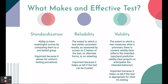Standardization is the ability to have meaningful scores by comparing them to a pre-tested group, allowing for uniform testing procedures. That's why we have standardized tests like the Regents, the SAT, the ACT, and for grad school the GRE, MCAT, GMAT, and LSAT. They write the test, have people take it, standardize the scores, and everybody does the same thing — same amount of time, same procedures — so you can compare where people fall.